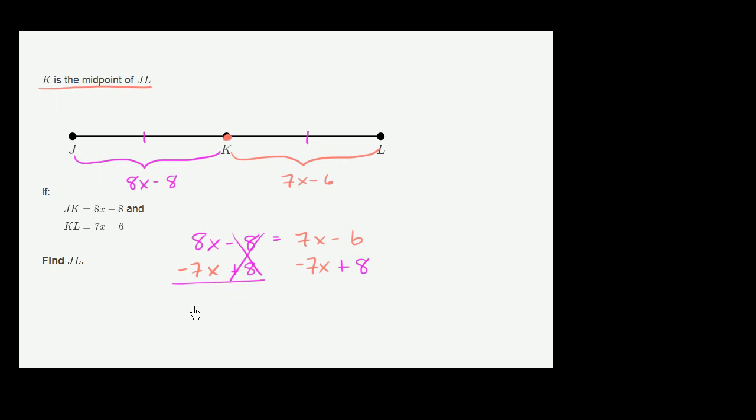On the left-hand side, you don't have an 8 anymore, and 8x minus 7x is just an x. And that's going to be equal to, on the right-hand side, you don't have any 7x's anymore, and negative 6 plus 8 is just 2. So we get x is equal to 2. But we're not done yet.